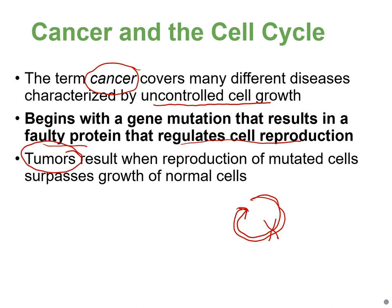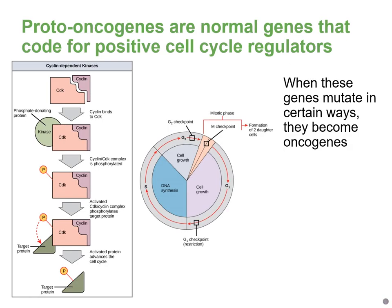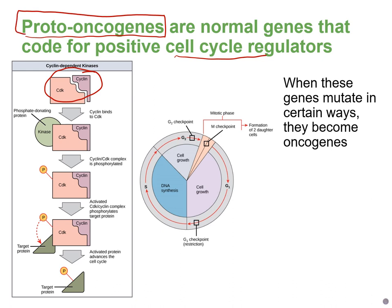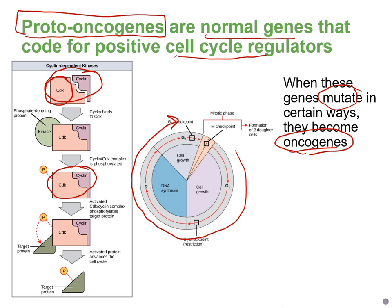Tumors are created when mutated cells grow faster than normal cells. Positive cell cycle regulators like CDKs and cyclins are encoded by genes called proto-oncogenes — normal genes. If they mutate and allow the cell cycle to continue when it shouldn't, they become oncogenes. For example, a mutated CDK oncogene could constantly activate and phosphorylate its target protein even without cyclin bound to it, promoting cancer.